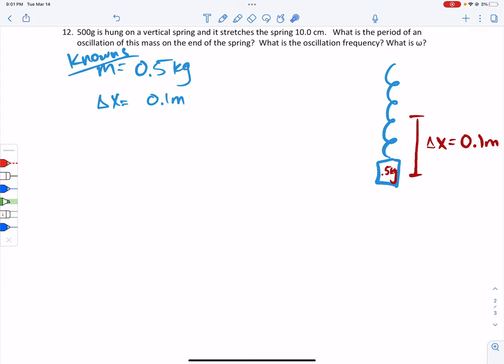And it says that this 500-gram mass was hung, and that stretched the spring this far. So my next step is a diagram. I kind of visualized the scenario of a spring that was naturally coiled up this far, and then I hung that weight on it, and it stretched it down to 0.1 meters away from where it started.